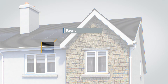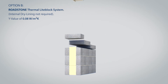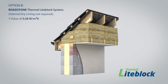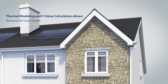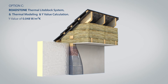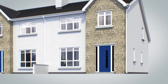Finally, Detail 6 is the eaves detail. Option A shows a standard concrete block construction having a thermal bridge giving a Y-Value of 0.15. Option B shows Roadstone thermal light block being used with the Part L detail, allowing the builder to take a Y-Value of 0.08, remove the internal dry lining from the walls, remove the solar panels from the roof, and reduce the cost of the front door, accruing cost saving while maintaining the A2 house. In Option C, the builder avails of Roadstone's Y-Value calculation service to get a Y-Value of 0.048, thereby allowing the reductions achieved in Option B plus reducing the thickness of insulation in the wall and attic while still maintaining the A2 BER rating.